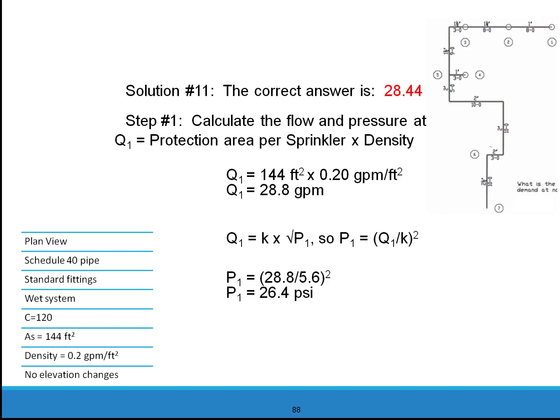So P1 is equal to Q divided by K squared. P is equal to 28.8 GPMs divided by 5.62 GPMs. So our pressure is 26.4 PSI.